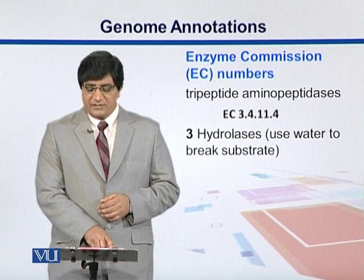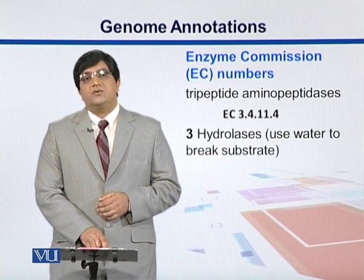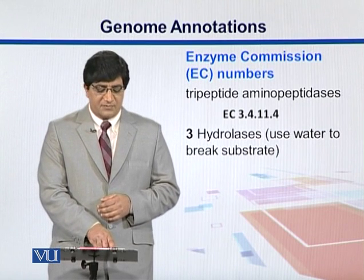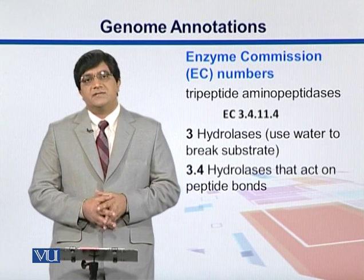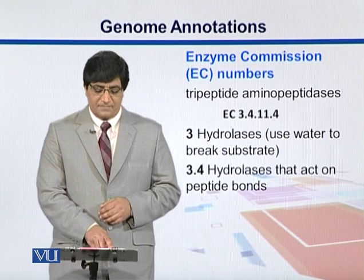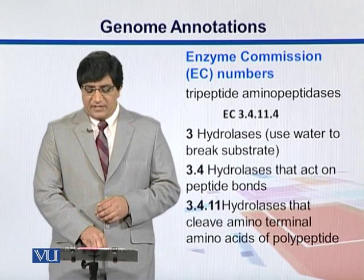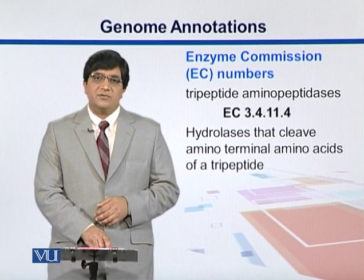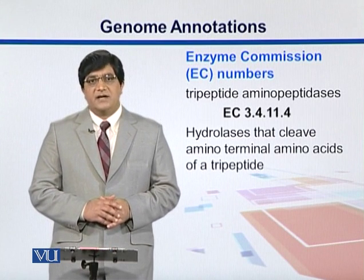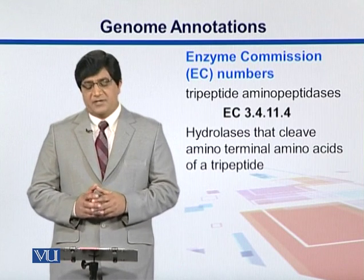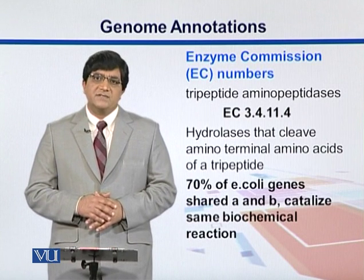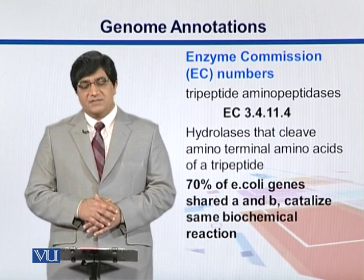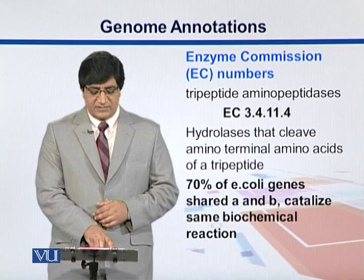For instance, we have the example EC 3.4.11.4. The first digit, three, means it is a hydrolase — an enzyme that uses water to break something up. 3.4 means it is a hydrolase that acts on peptide bonds, so it is breaking some proteins. 3.4.11 means it is a hydrolase that cleaves the amino terminal amino acids on a polypeptide. The last digit specifies that these are hydrolases that cleave the amino terminal amino acid of a tripeptide. Using this scheme, 70% of E. coli genes shared the first two classes A and B, catalyzing the same biochemical reactions.